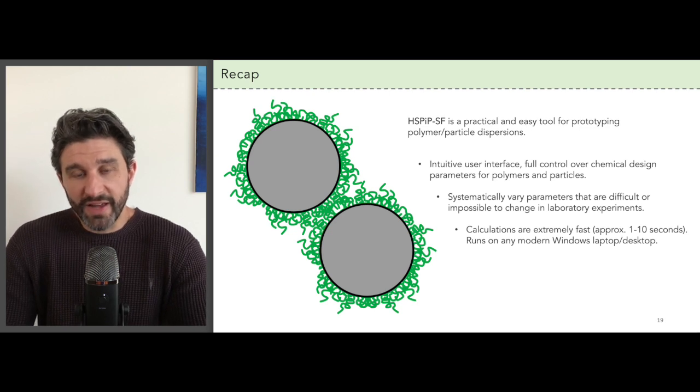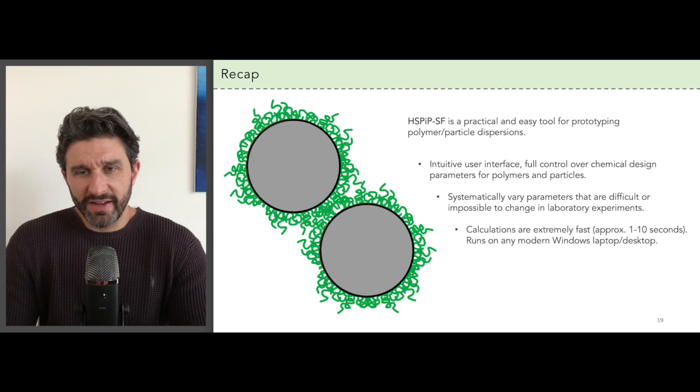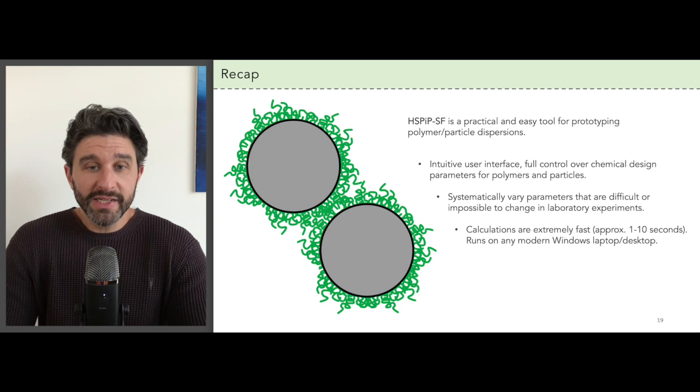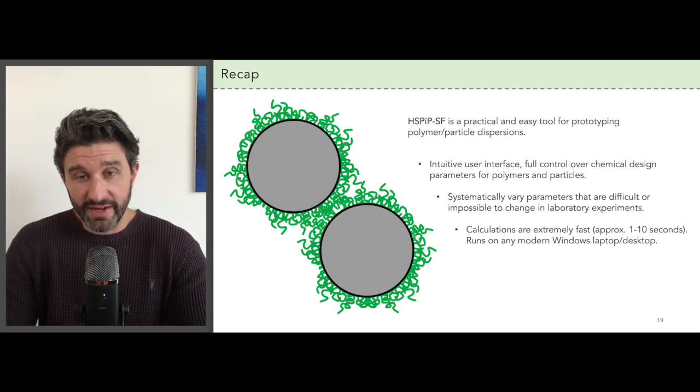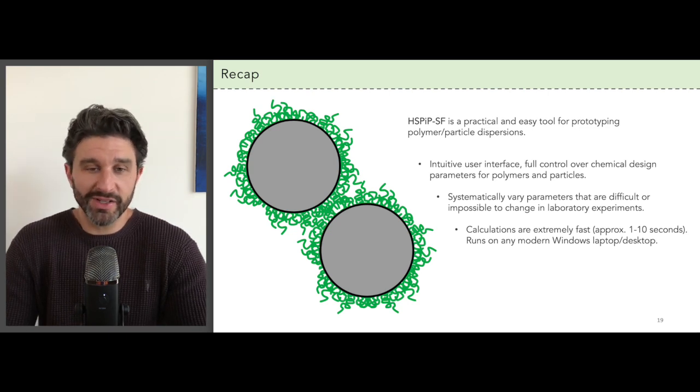You can run this app on a basic Windows laptop or desktop and it takes at most 10 seconds to run a calculation, but in most cases less than one second. This really is where the value of HSP-IP SF lies for quickly testing designs and scanning through possible design parameters before diving into the formulation lab.